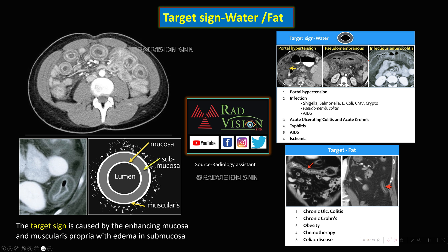Whereas when the submucosa is replaced by fat, you will get the target fat sign, which may be seen in chronic ulcerative colitis, Crohn's disease, obesity, chemotherapy, or celiac disease.